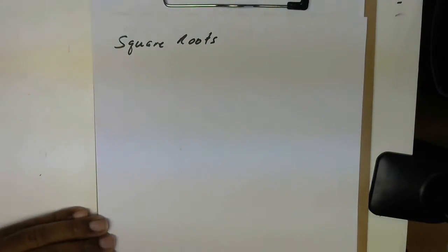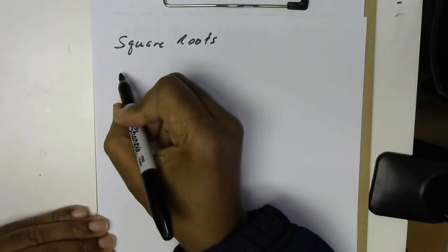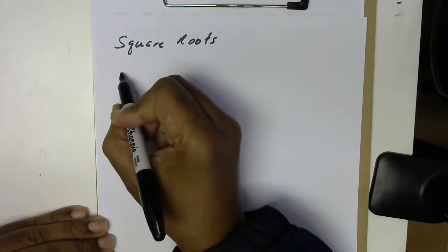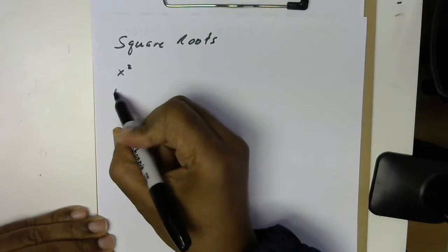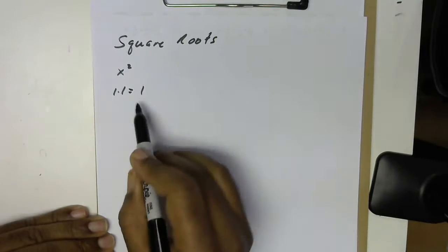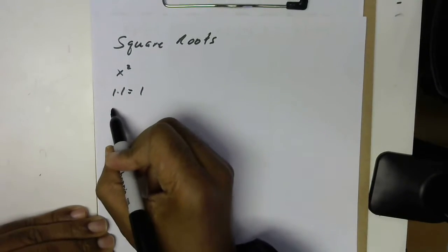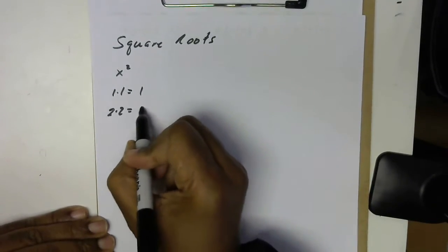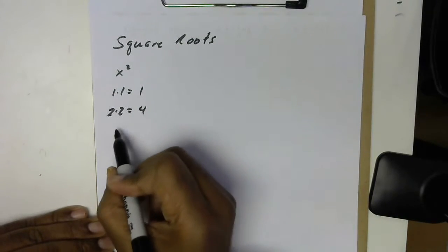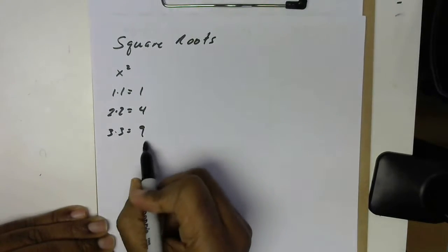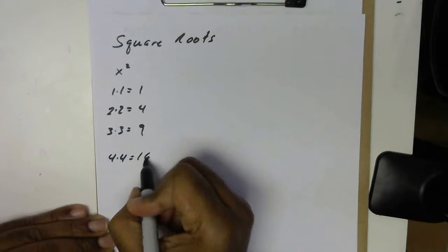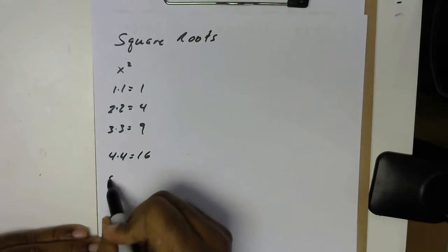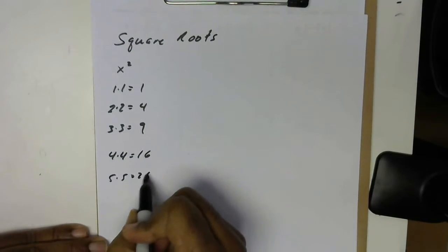Let's take a look at square roots. To get started, we'll look at squares first and then we'll look at the square roots. Squares come from numbers like 1 times 1, which is 1 — that's a square. 2 times 2 makes 4, that's the next square. 3 times 3 makes 9, and 9 is a square. 4 times 4 is 16, that's a square. 5 times 5, 25 — that's a square.